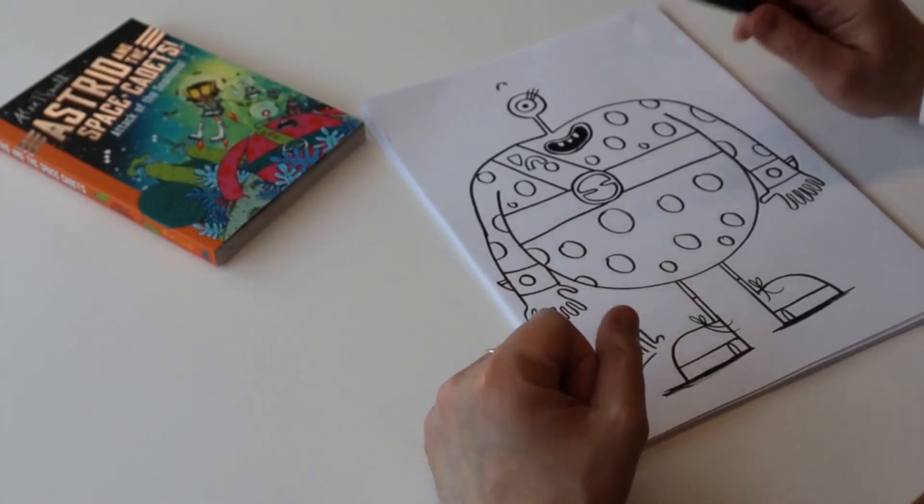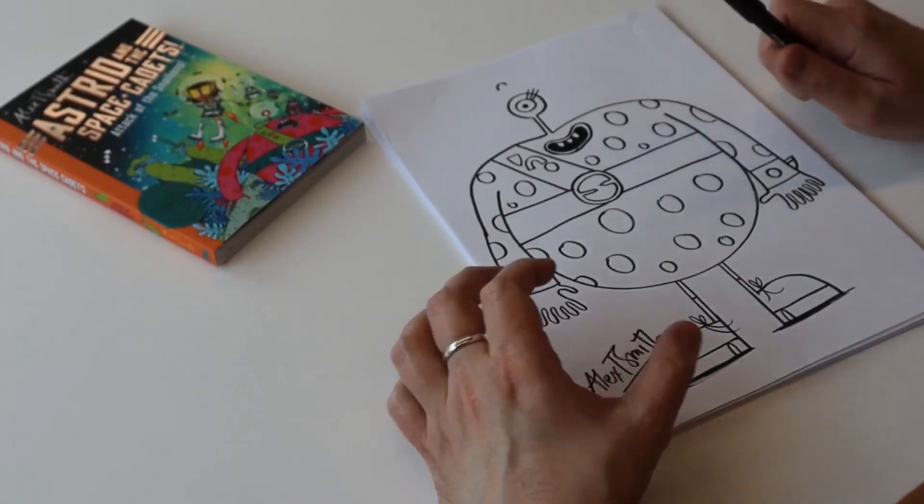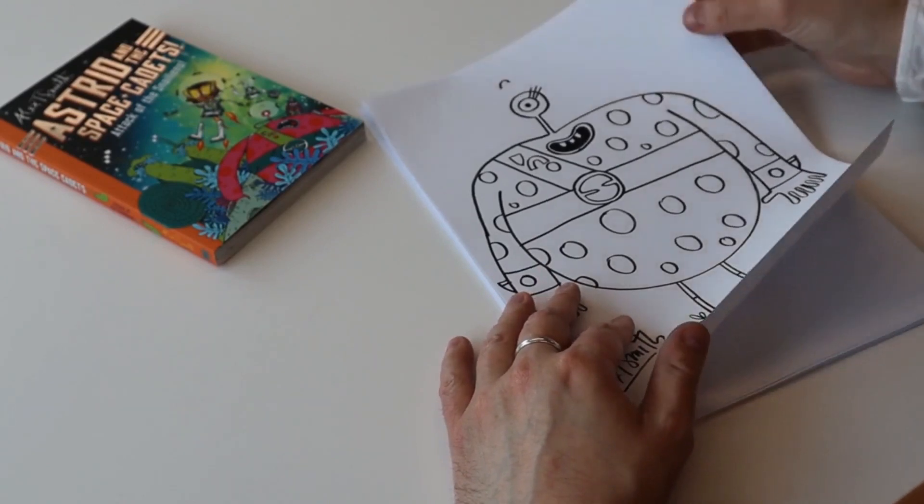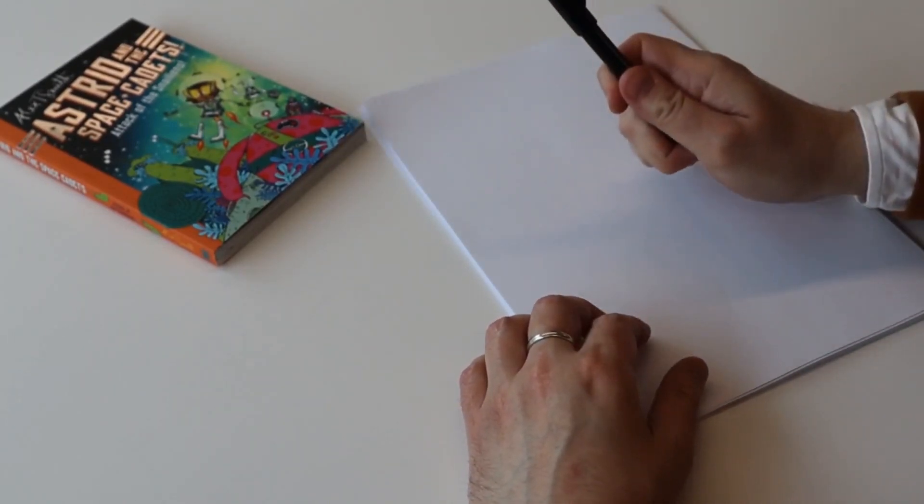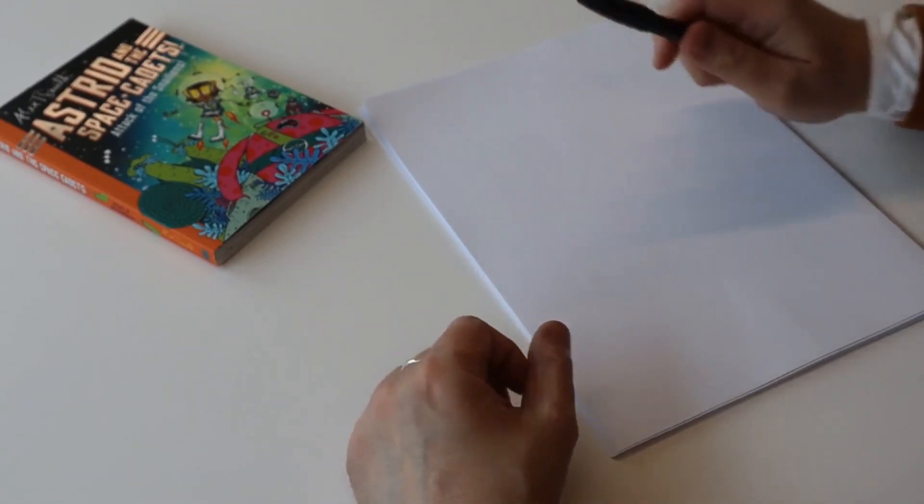Thanks Mr. Dilly. So today I'm going to teach you how to draw Beryl, one of the space cadets. What you need is a piece of paper and a pen or a pencil, and that's it. So let's go.